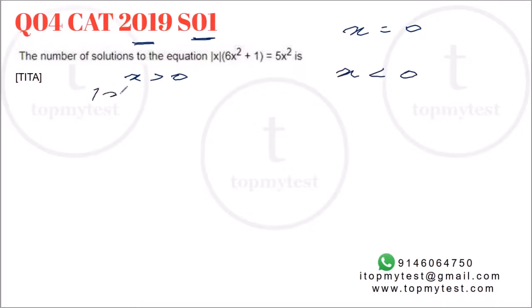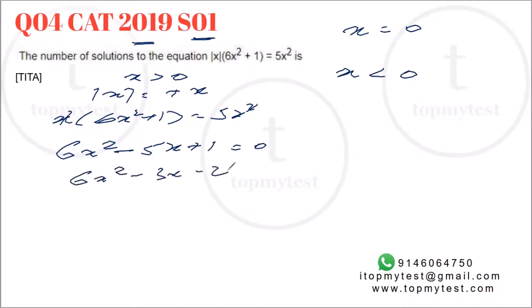If x is greater than 0, modulus of x will be equal to positive x. So, if you substitute this, x times 6x square plus 1 equals 5x square. So, this goes out. You can write it as 6x square minus 5x plus 1 equals 0. This gives you 6x square minus 3x minus 2x plus 1 equals 0. So, you'll get 3x minus 1 times 2x minus 1 equals 0. So, x should be half and one third, which basically satisfies the criteria that x is greater than 0.